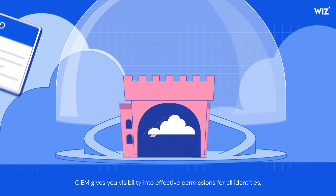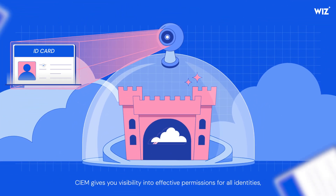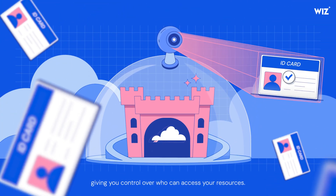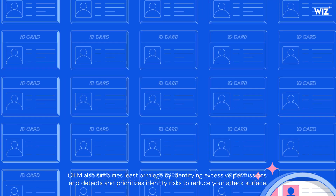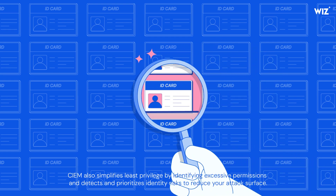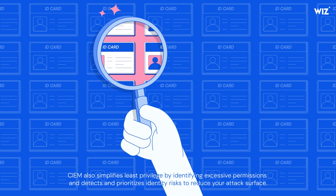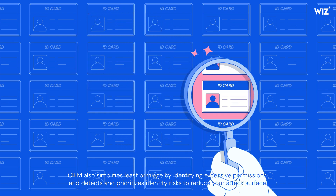CIEM gives you visibility into effective permissions for all identities, giving you control over who can access your resources. CIEM also simplifies least privilege by identifying excessive permissions and detecting and prioritizing identity risks to reduce your attack surface.